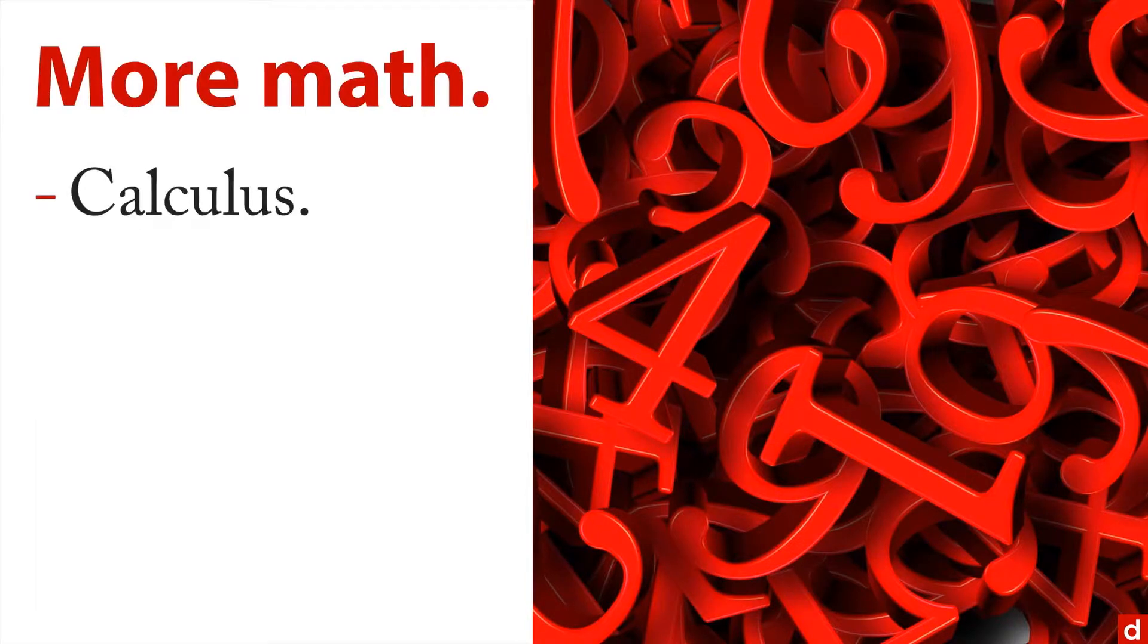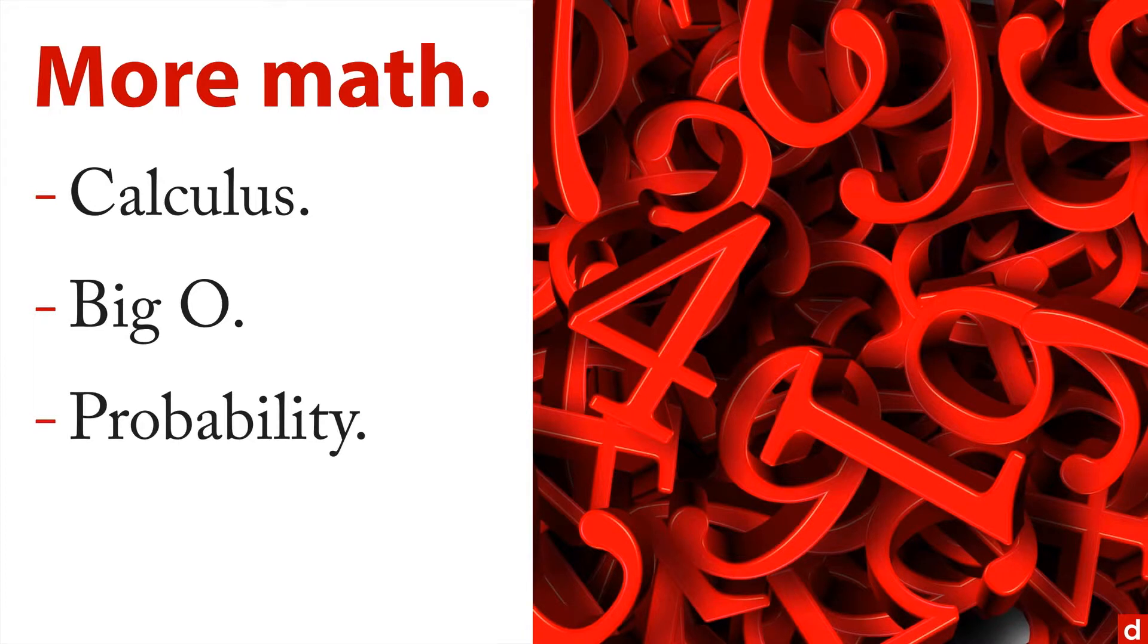Now, there's more math. You can get some calculus. You can get some big O, which has to do with the order of a function, which has to do with sort of how fast it works. And then Bayes' theorem, which is a way of getting what's called a posterior probability, can also be a really helpful tool for answering some fundamental questions in data science.